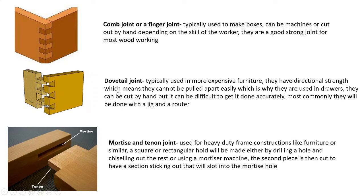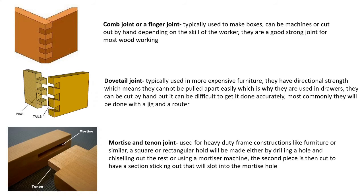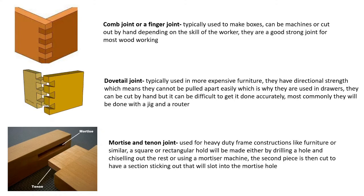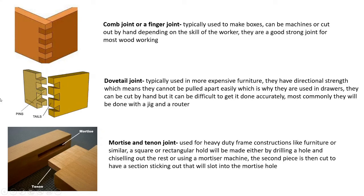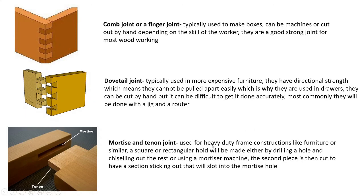A dovetail joint is similar to a finger joint but has directional strength — once assembled, the joint cannot be pulled apart in any other direction. Doing these by hand is incredibly difficult, but you can buy a dovetail jig and use a router to produce them more easily. The name comes from the shape of the tails, which resemble a dove's tail.